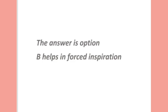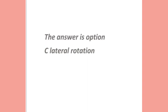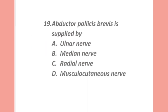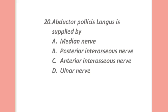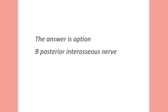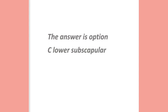True about serratus anterior: bipennate muscle, helps in forced inspiration, supplied by subscapular nerve, or forms lateral wall of axilla? The answer is option B — helps in forced inspiration. All are functions of latissimus dorsi except: extension, adduction, lateral rotation, or medial rotation? The answer is option C — lateral rotation. Abductor pollicis brevis is supplied by: ulnar nerve, median nerve, radial nerve, or musculocutaneous nerve? The answer is option B — median nerve. Abductor pollicis longus is supplied by: median nerve, posterior interosseous nerve, anterior interosseous nerve, or ulnar nerve? The answer is option B — posterior interosseous nerve.